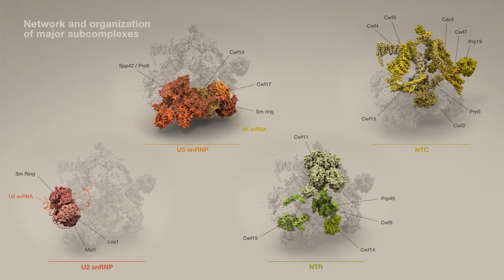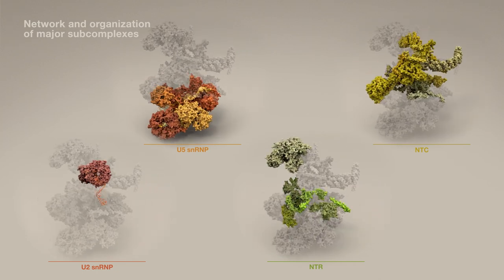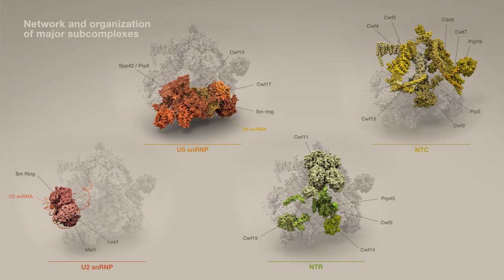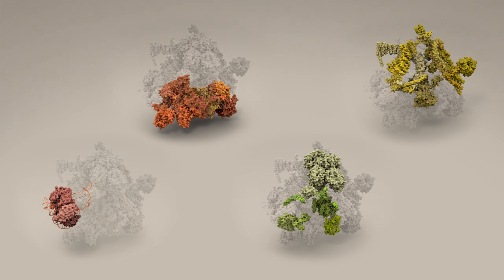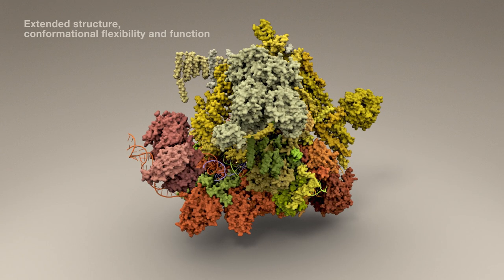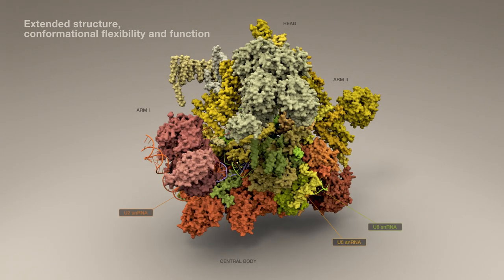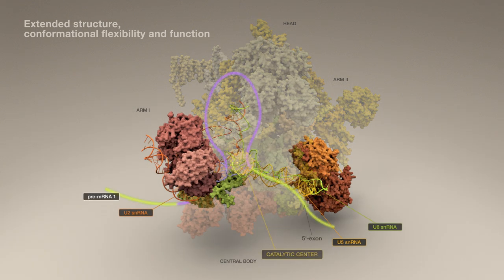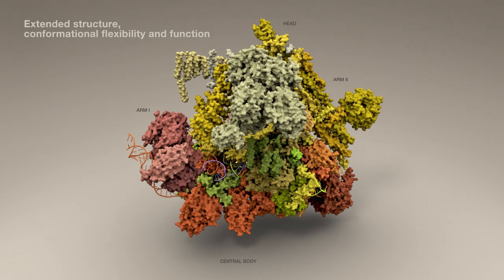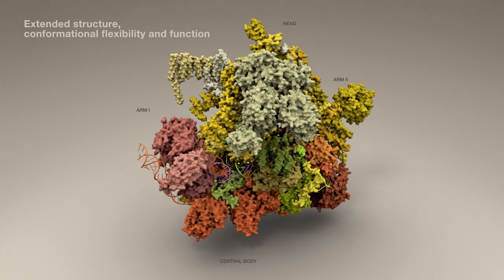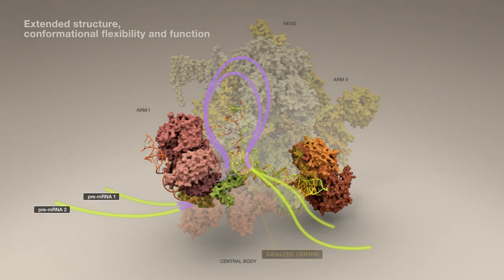The model of this spliceosome mainly comprises four subcomplexes. The U5 SNRP forms the key scaffold onto which the other three subcomplexes appear to dock. The plausible conformational flexibility of the spliceosome head and arms — the components found therein which will anchor pre-mRNAs close to the catalytic center in the central body — likely function in the choreography of proper splicing, especially of pre-mRNAs of varying lengths and sequences.